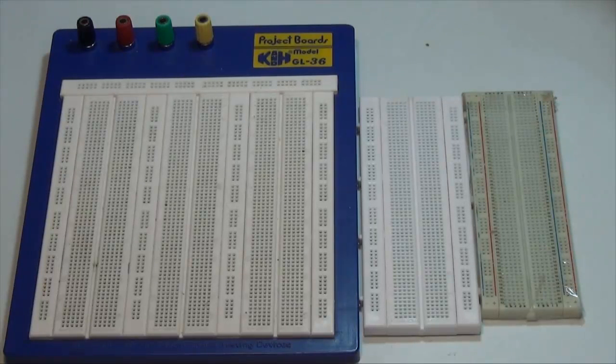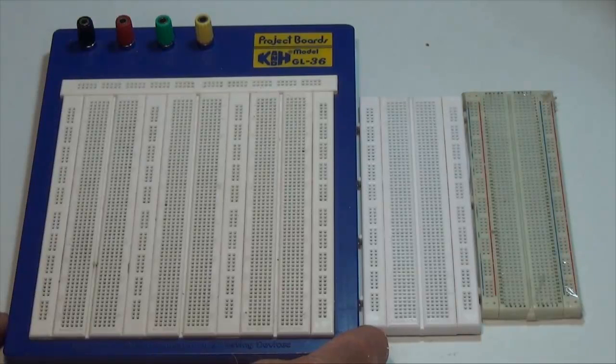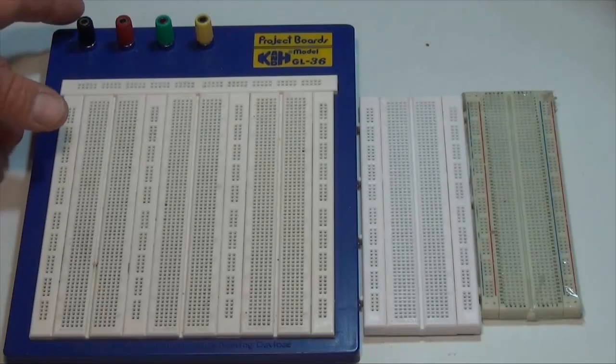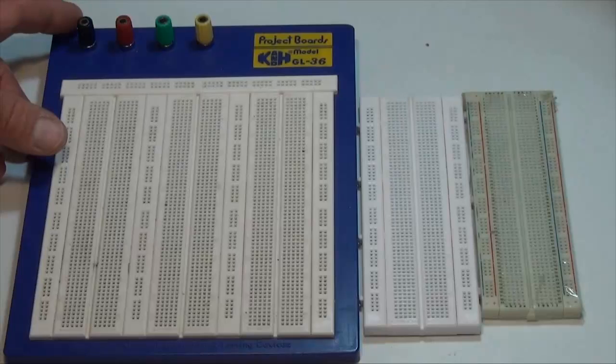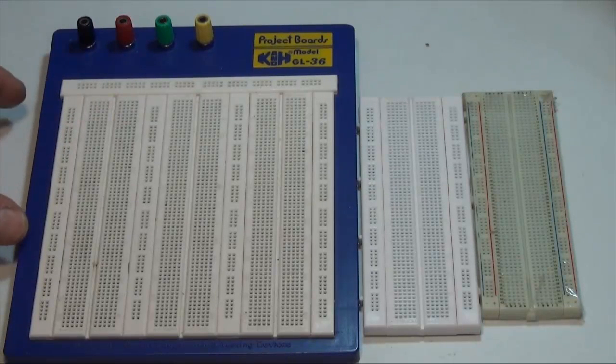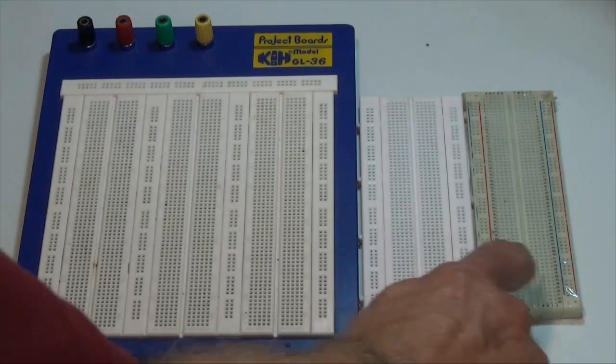So I have three different types here. I have a very large project board for some very large and complicated circuits that you would like to build. It has some external banana jacks that you can attach to various points of the circuit board and then there are some smaller ones here.